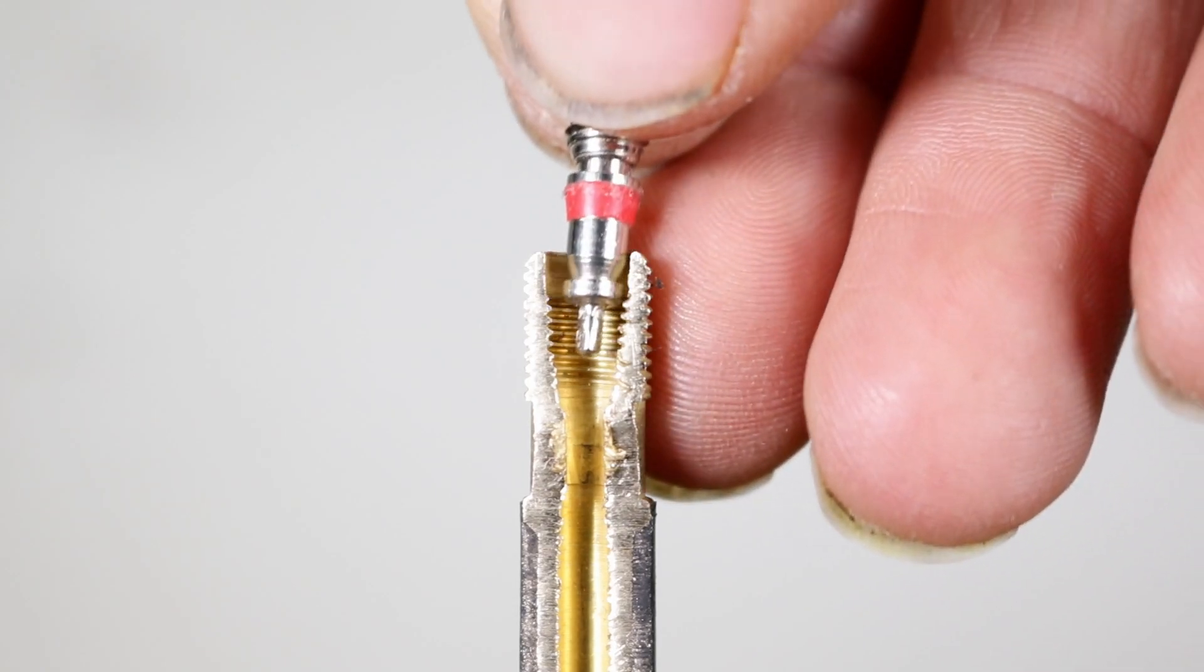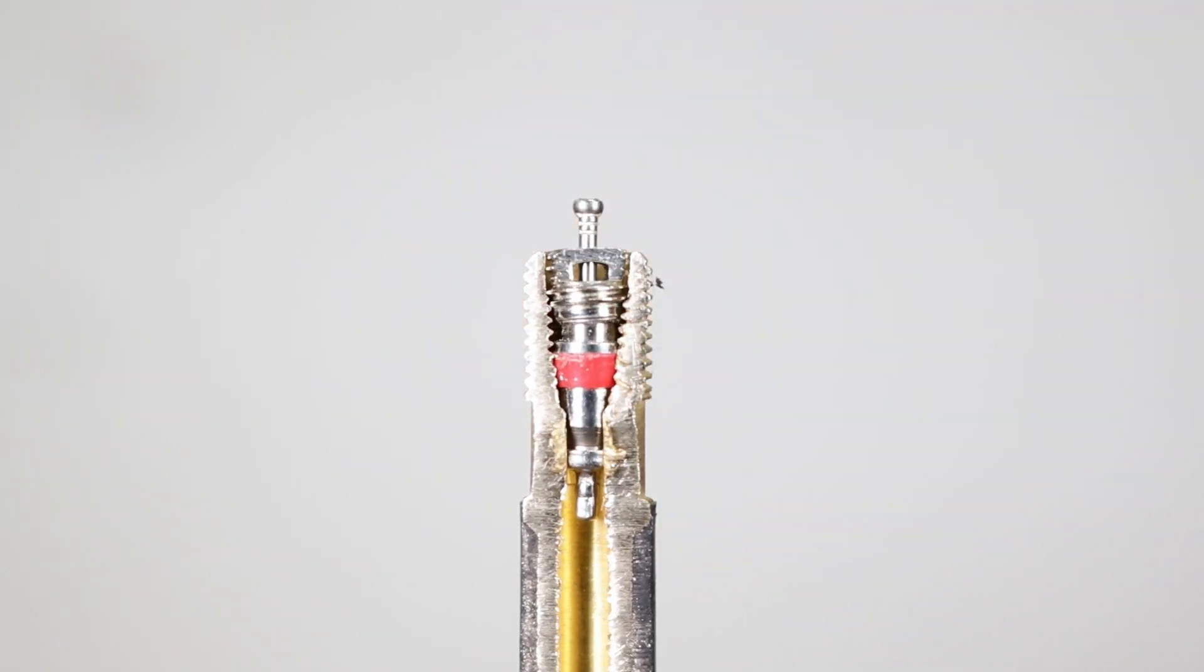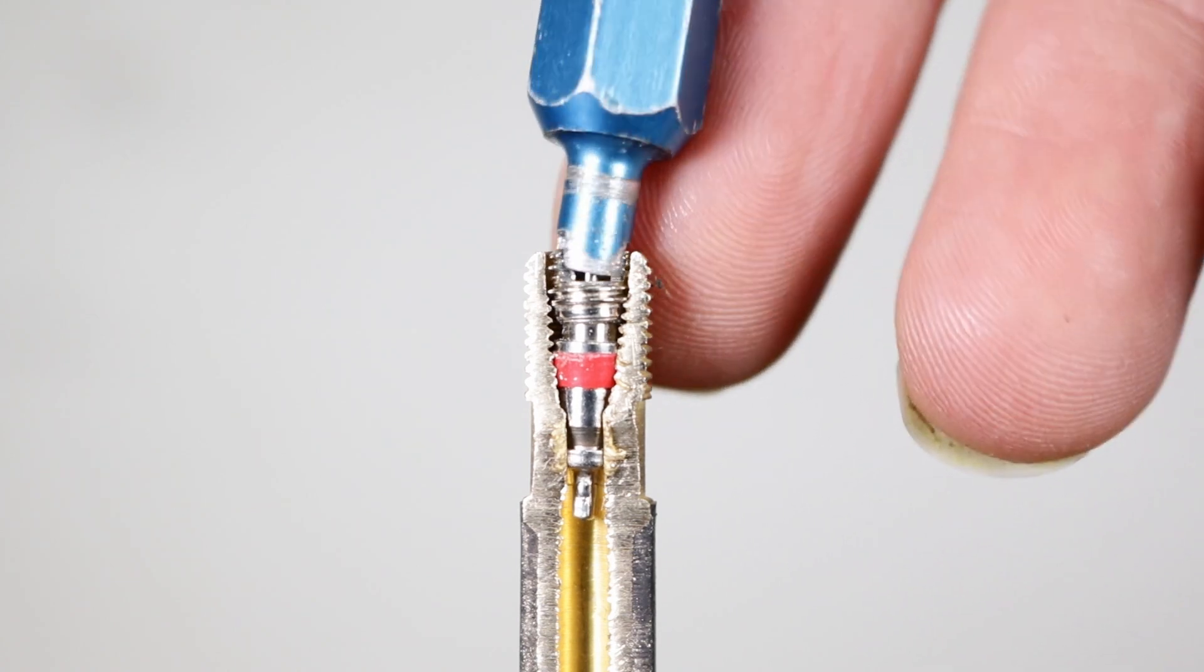Fit the new valve core in the valve so that the threaded bit is uppermost. Screw in and tighten the valve core.